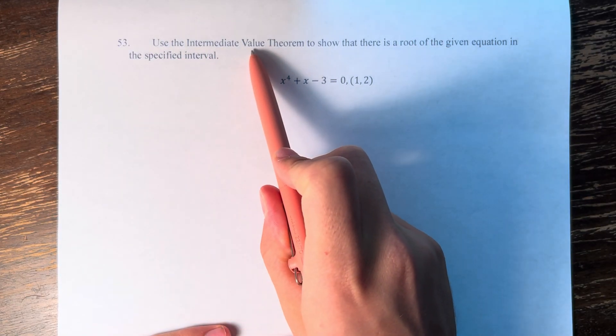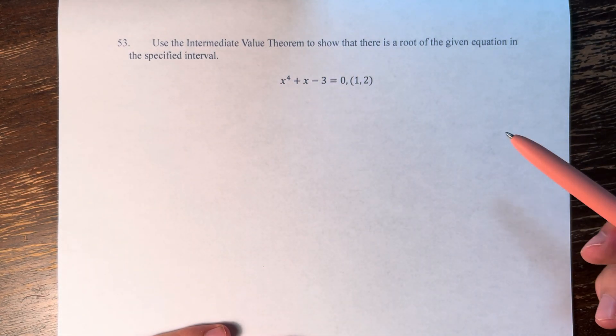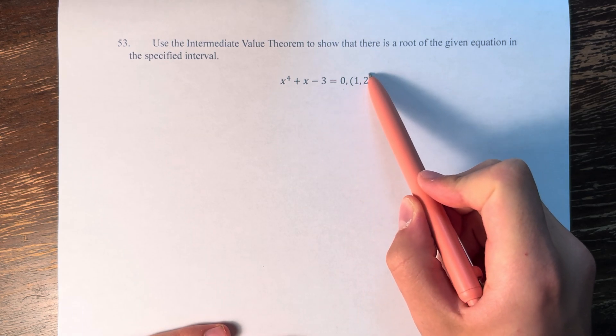In this problem, we're asked to use the intermediate value theorem to show that there's a root of the given equation in the specified interval. So we have x to the fourth plus x minus 3 is equal to 0. We're looking at the interval from 1 to 2.